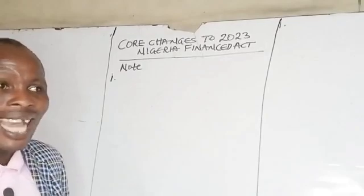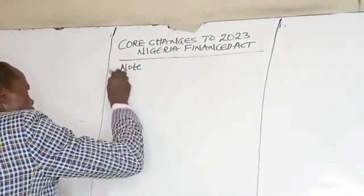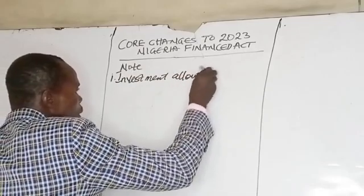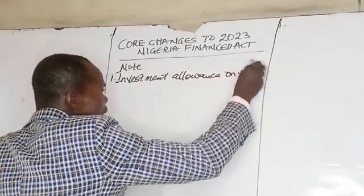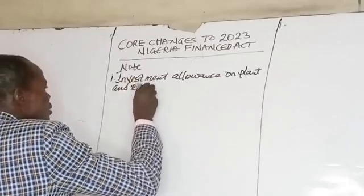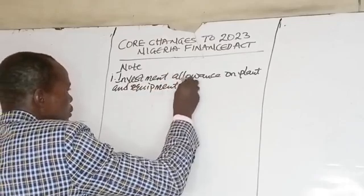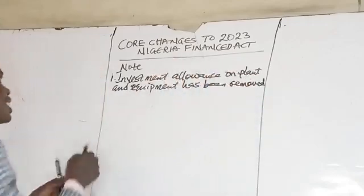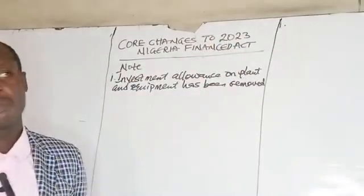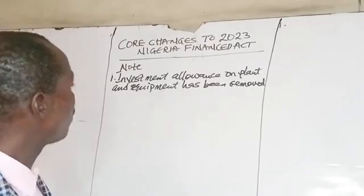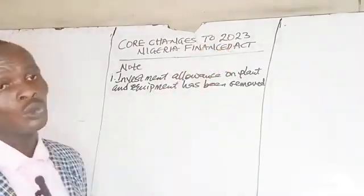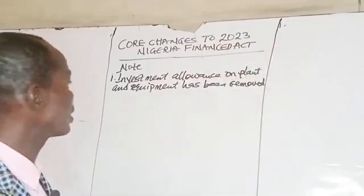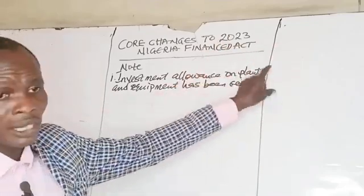Change number one: investment allowance on plant and equipment has been removed. This is a change introduced by the 2023 Finance Act. Since we are in 2024, if your exam question involves 2022, 2021, 2020, or any year prior to 2023 year of assessment, you will still need to apply investment allowance on plant and machinery.